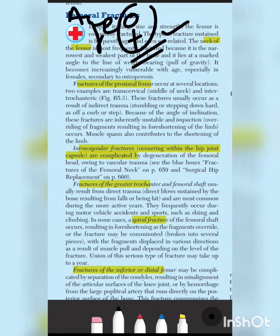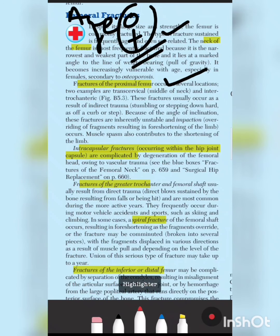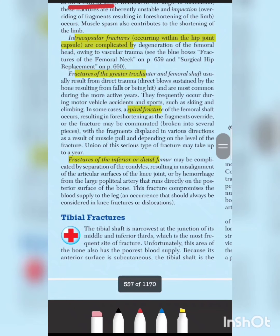Proximal femoral fractures can result from indirect trauma — for example, taking a hard step that transmits force to the femoral neck. This can override bone fragments, causing shortening of the limb due to muscular spasm. If the fracture is within the capsule involving the femoral head, it is very complex because there is associated vascular trauma and vessel damage. Greater trochanter or shaft fractures result from direct trauma.